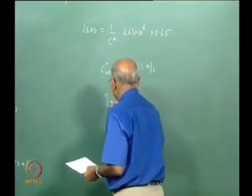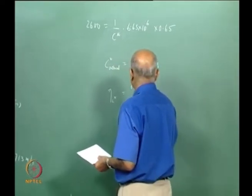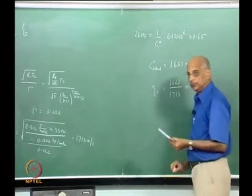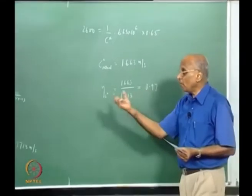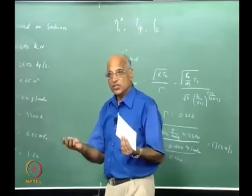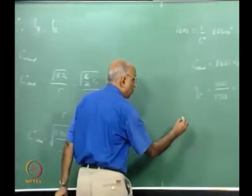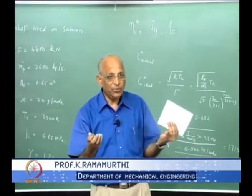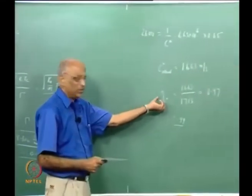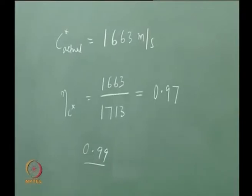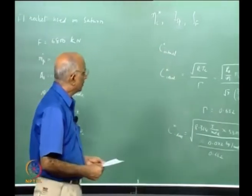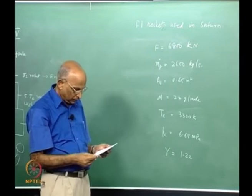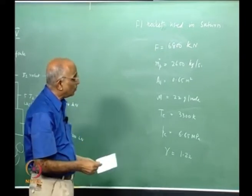Therefore the C* efficiency η_C* = 1663 / 1713 = 0.97. You find that the C* efficiency is quite high — even for a rocket made in 1962. Present rockets like the Space Shuttle main engine have a C* efficiency of around 0.99, meaning there is hardly any room for improving the combustion further.